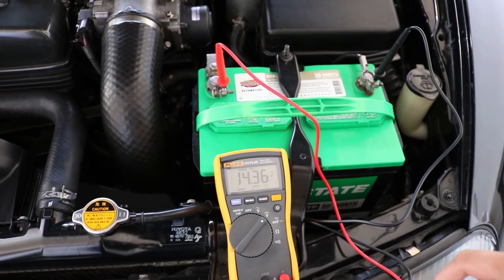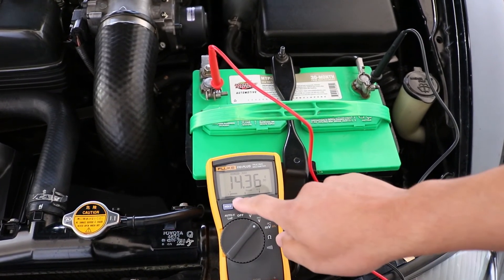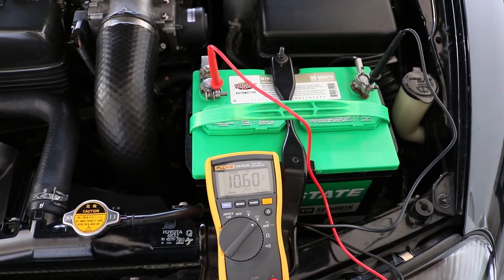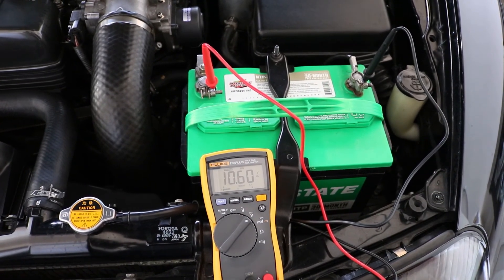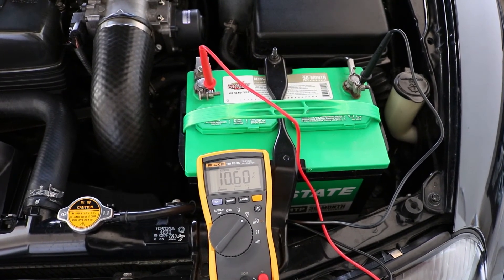Okay, so now we're going to look. That was our maximum. But what we want to do is we want to capture the minimum. And the minimum was 10.6, which is really good because you should not go under 10 volts whenever you're starting the vehicle as far as the voltage drop.